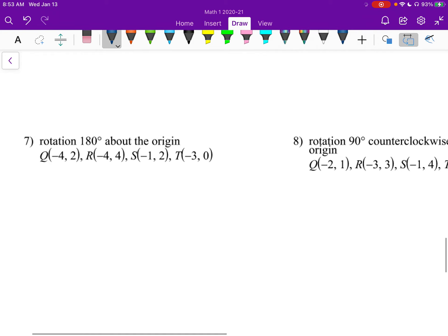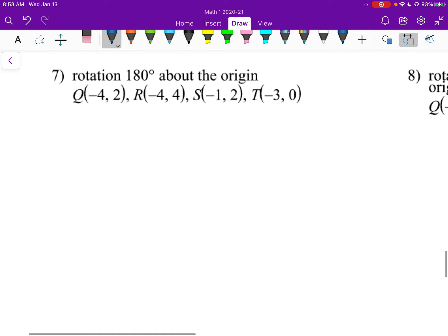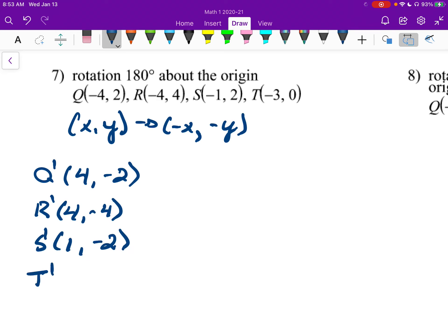Moving on. Number seven. Another rotation 180 degrees. Nice. So this takes x and y, and it goes to negative x, negative y. So I'll have q prime will be 4, negative 2. r prime will be 4, negative 4. s prime will be at 1, negative 2. And t prime will be at 3, 0. These should be pretty easy for you to do. Or at least the 180 degrees, I think, should be pretty easy. You just flip the sign. If it's negative, make it positive. If it's positive, make it negative.